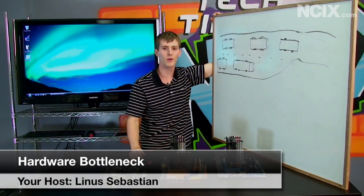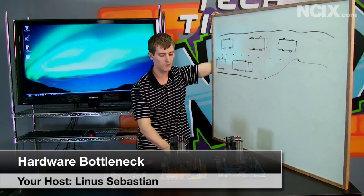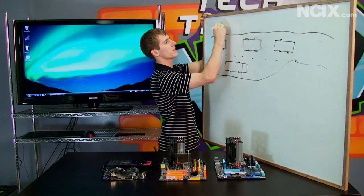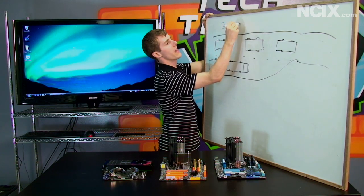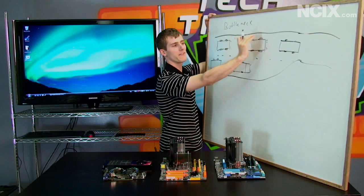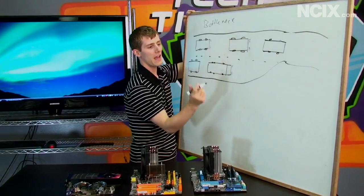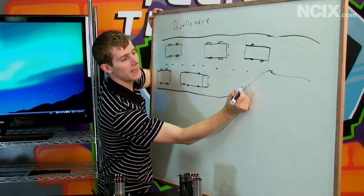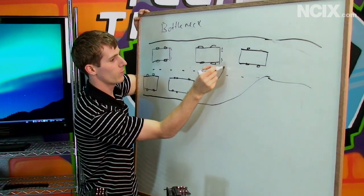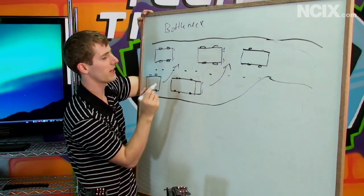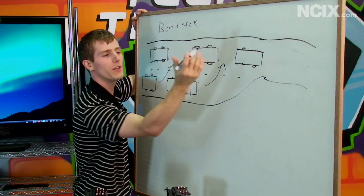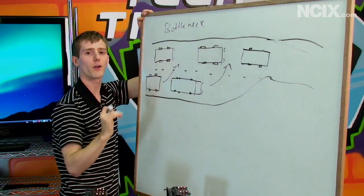Today's episode of NCIX Tech Tips is going to be covering the topic of bottlenecking. In this crudely drawn illustration, there are two lanes of traffic moving side by side, and then all of a sudden one lane ends and becomes one lane. The truck has to wedge himself in and the car has to merge — basically everyone has to slow down. Whenever there's a bottleneck, it can only go as fast as the narrowest part of the road.